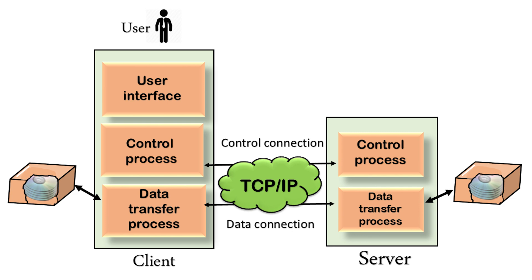When an FTP session is started between a client and a server, the client initiates a control TCP connection with the server side and sends control information over it. When the server receives this, it initiates a data connection to the client side. Only one file can be sent over one data connection, but the control connection remains active throughout the user session.